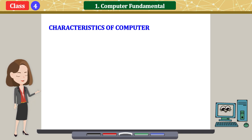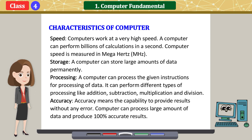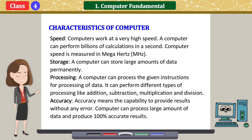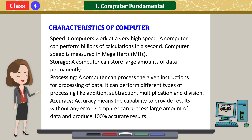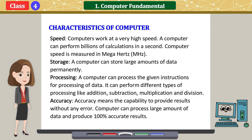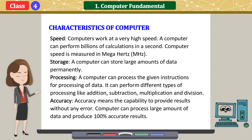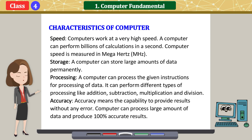Characteristics of computer — Speed: computers work at a very high speed. A computer can perform billions of calculations in a second. Computer speed is measured in megahertz. Storage: a computer can store large amounts of data permanently. Processing: a computer can process the given instructions for processing of data. It can perform different types of processing like addition, subtraction, multiplication, and division.